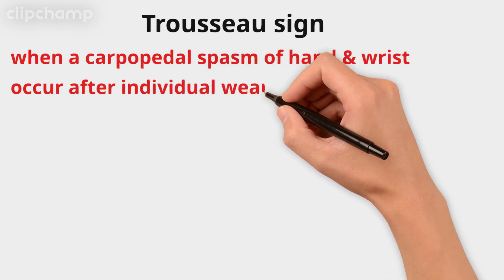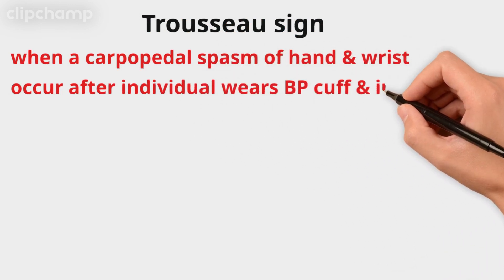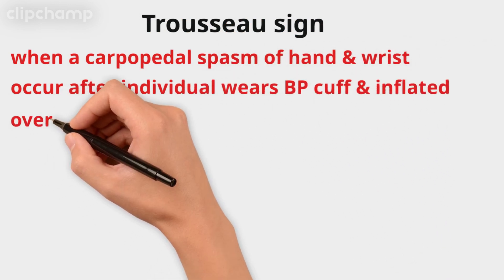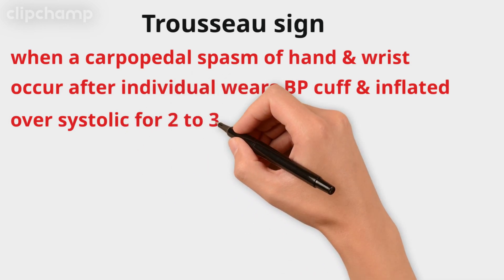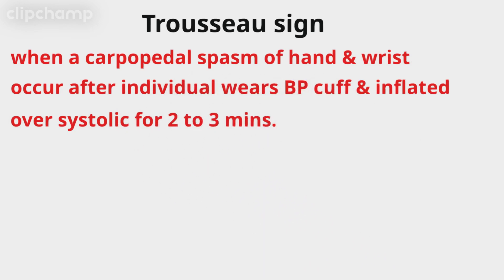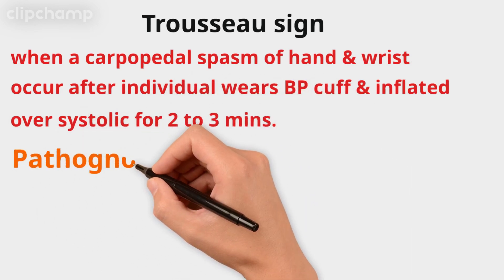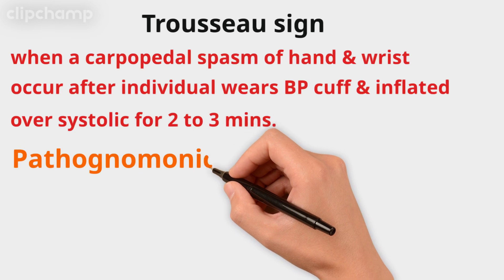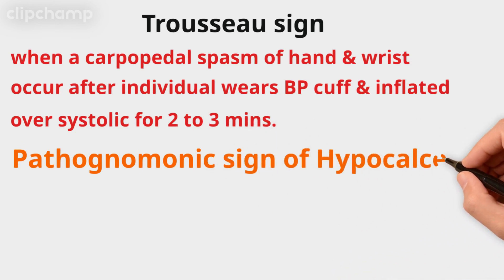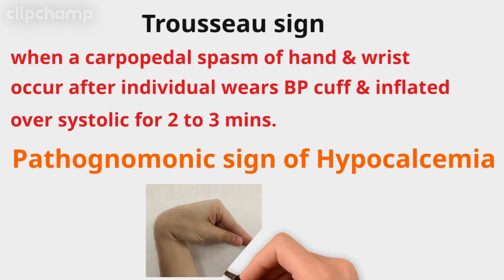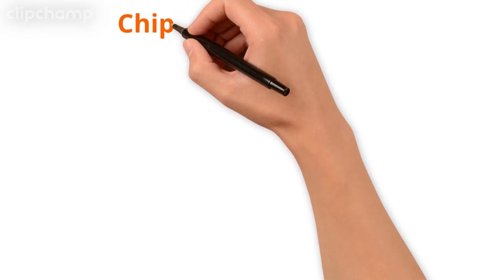Next is Trousseau's sign. Trousseau's sign is when a carpopedal spasm of the hand and wrist occurs after a blood pressure cuff is inflated above systolic pressure for two to three minutes and the patient feels spasm. This is the pathognomonic sign of hypocalcemia. Here you can see the Trousseau's sign spasm.